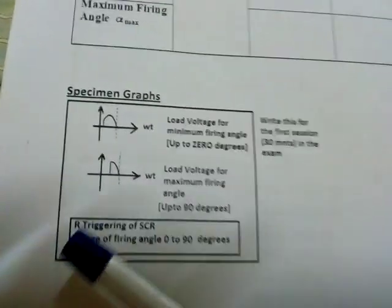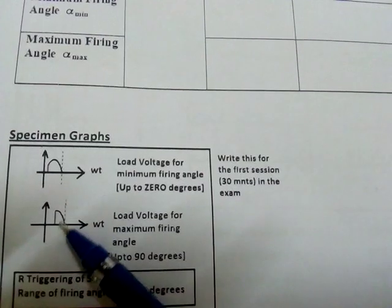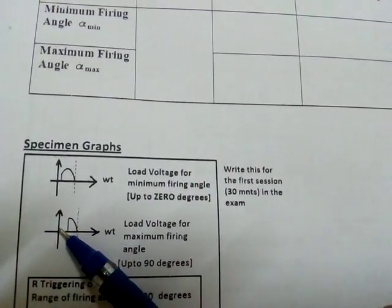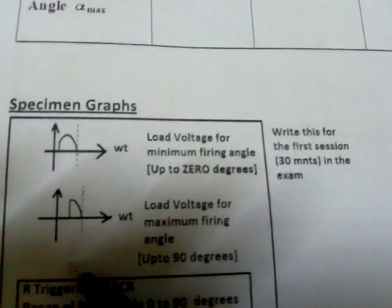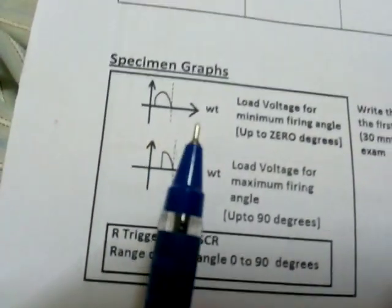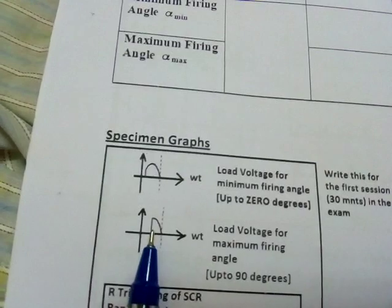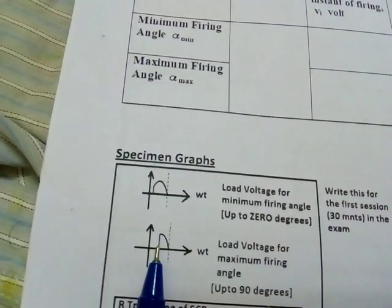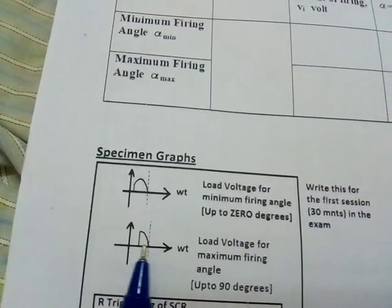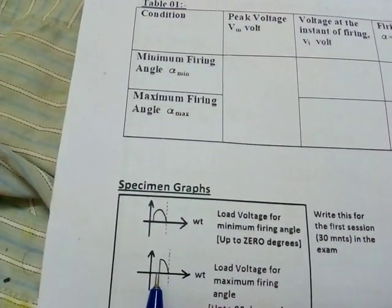Okay, this is for alpha max. Alpha max you will get close to 0. Alpha minimum you will get close to 90 but lesser than 90 degrees, or up to 90 degrees. You cannot get more than 90 degrees. So you should get here quarter waveform at least. This should not be less than quarter waveform. This should be at least a little bit more than quarter waveform.